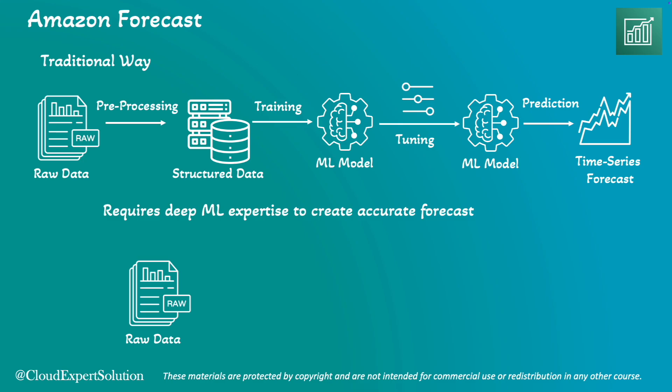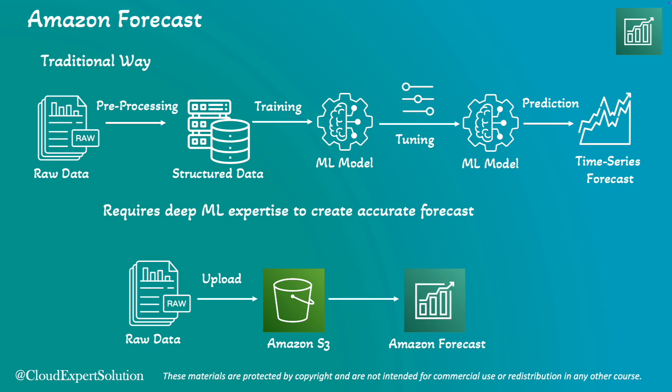Traditional machine learning processes require deep machine learning expertise to create accurate forecasts. In contrast, using Amazon Forecast simplifies the process dramatically. You simply upload your raw data into an Amazon S3 bucket and feed it directly to Amazon Forecast. From there, Amazon Forecast takes care of the heavy lifting, including automating the complex steps and generating accurate forecasts efficiently.